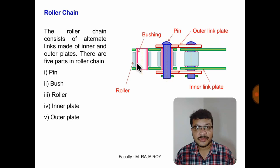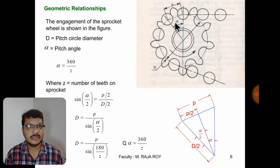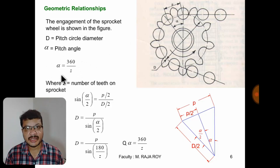Now we will see some geometric relations. This is the representation of the chain over the sprocket. The distance between the centers of two adjacent rollers of the chain link is called the pitch. The angle subtended by this chain link with the center is called the pitch angle, denoted as alpha. This alpha value equals 360 divided by the number of teeth z.